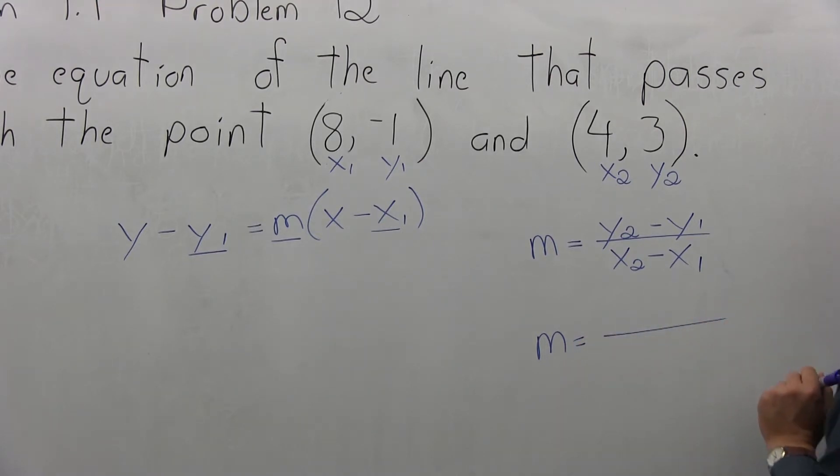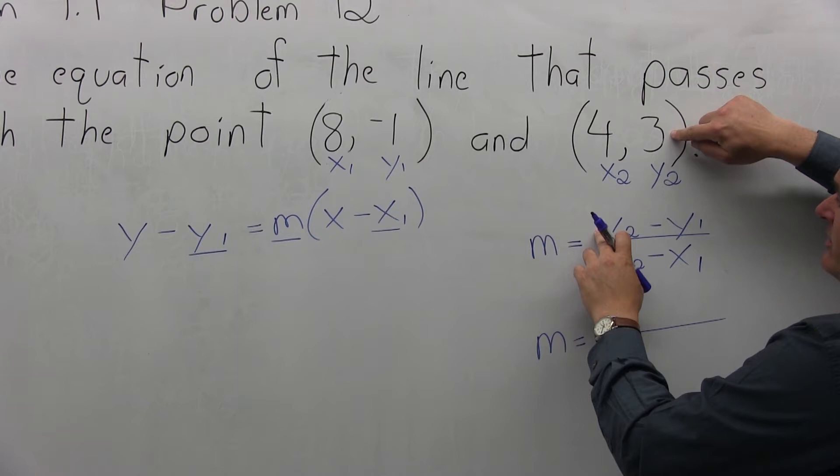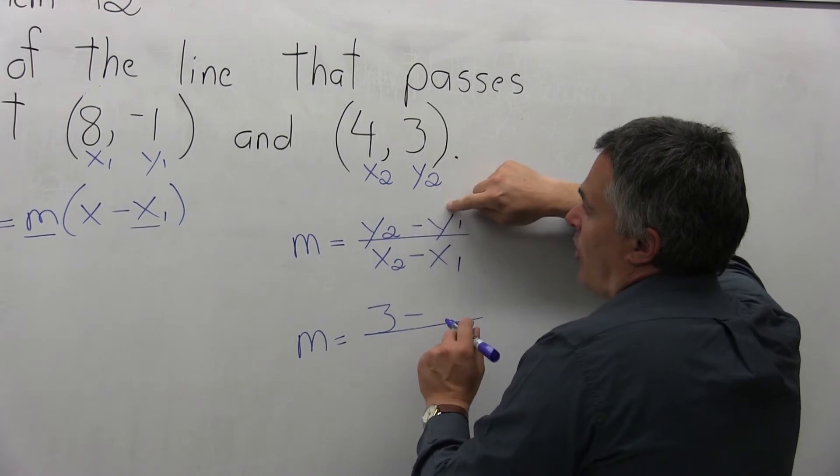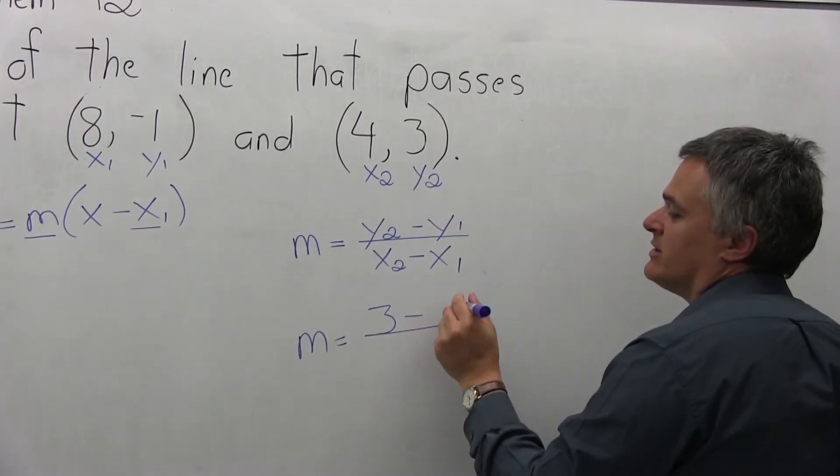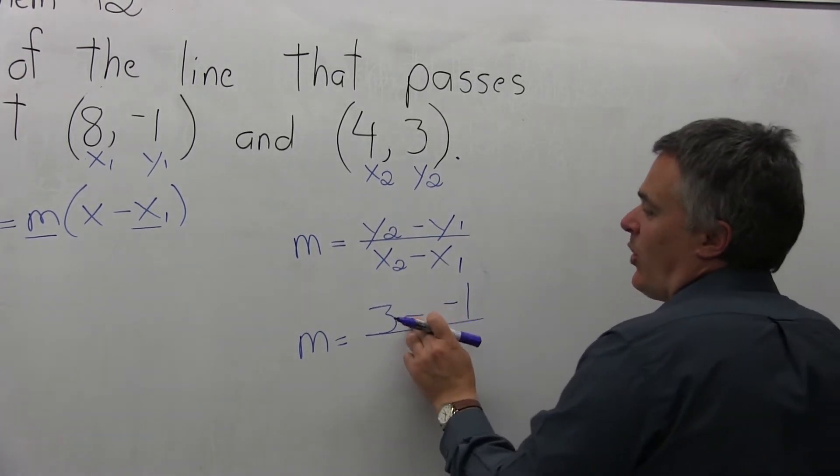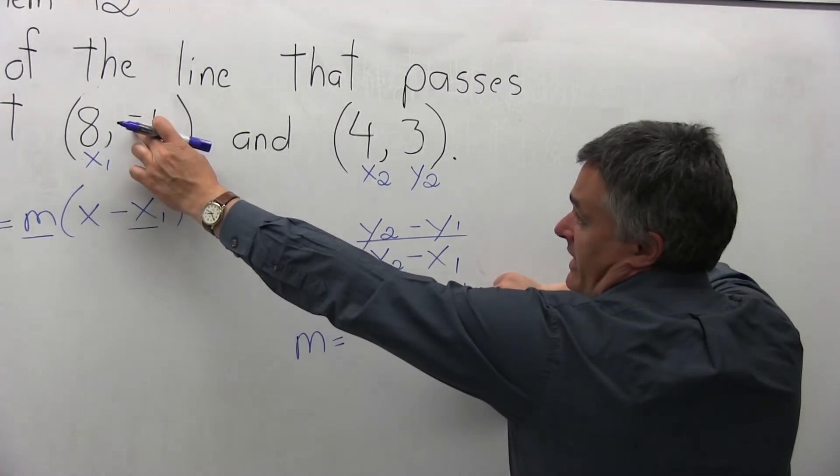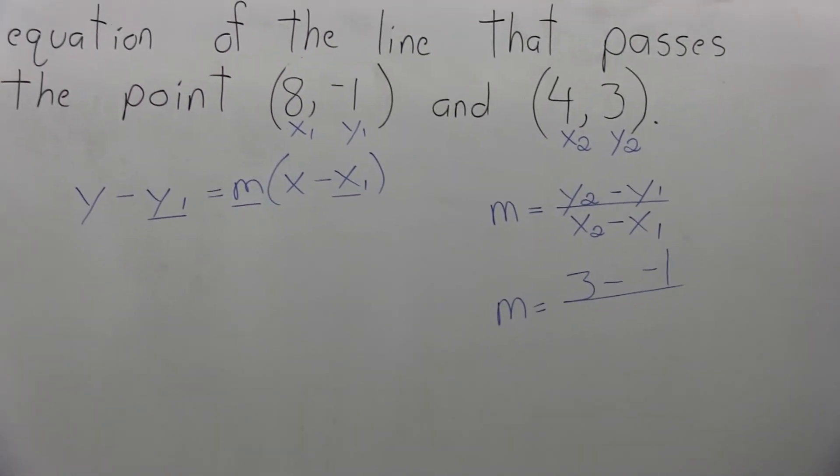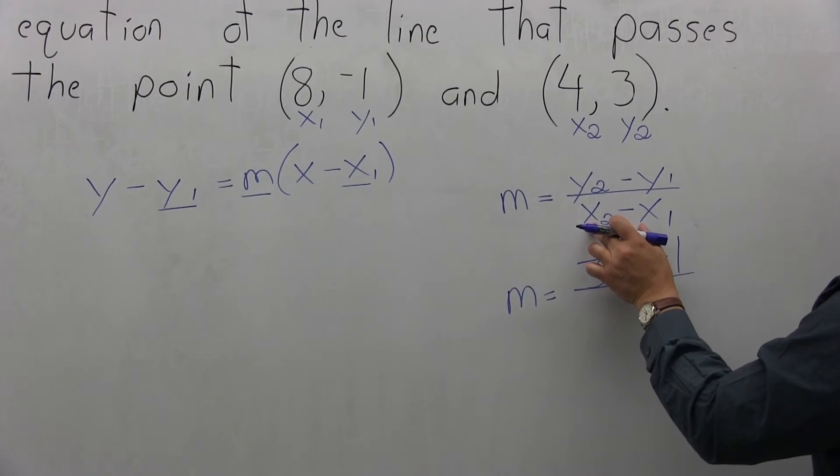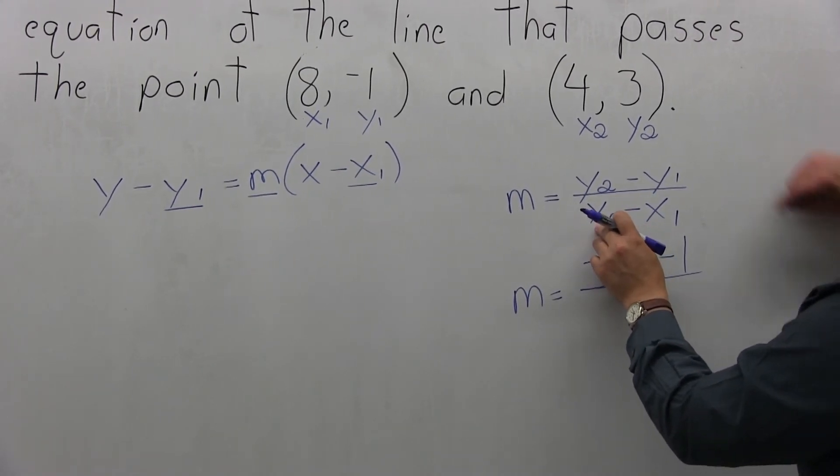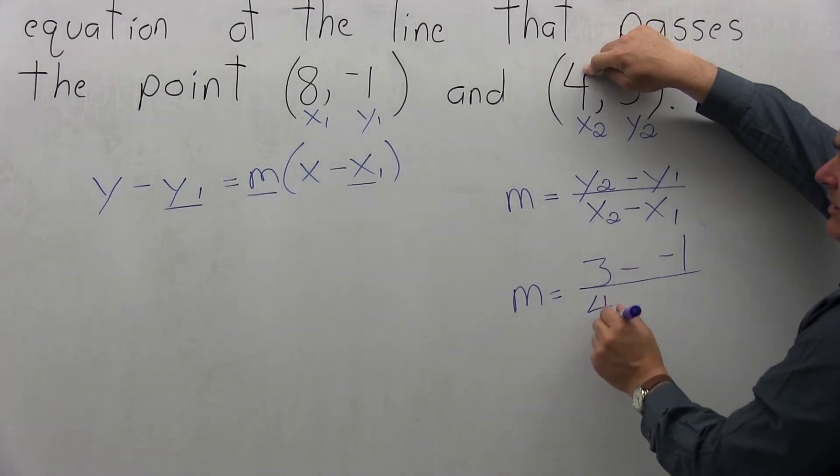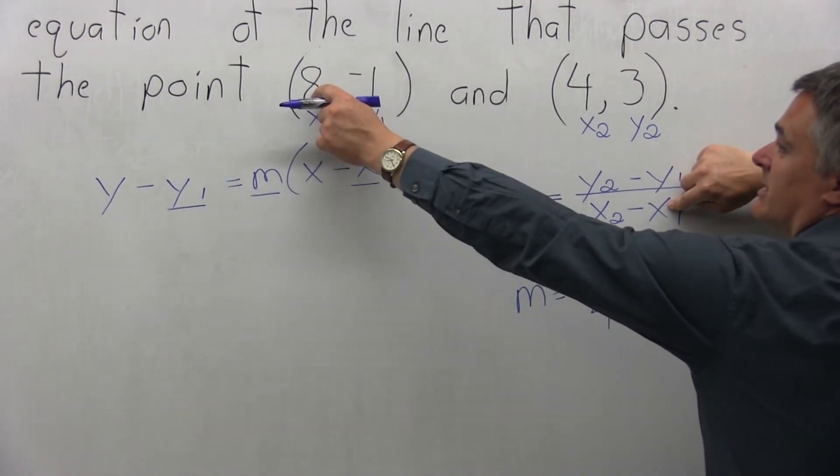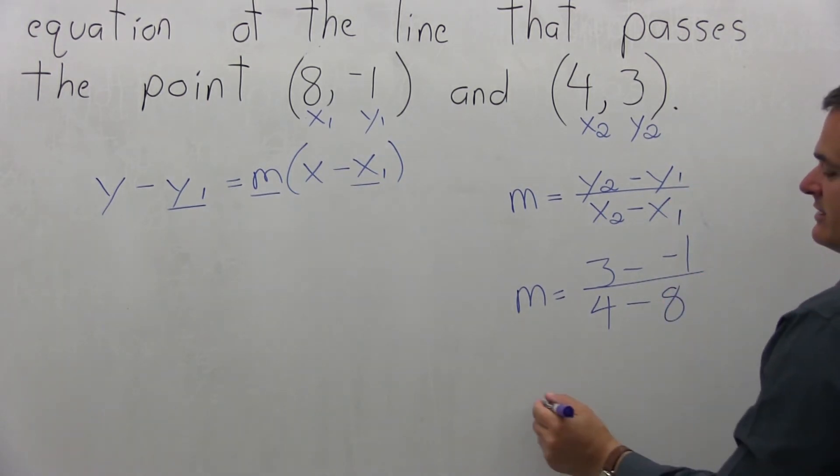So, m equals, on top, I'm going to fill in y2. The value of y2 is 3. Then minus y1, the value of y1 is negative 1. So here's one of those cases where we have two negatives. One negative from the formula, and the other negative from the fact that the point is a negative value. By the end, that's going to become 3 plus 1 instead of 3 minus negative 1. In the denominator of my slope formula, I have x2 minus x1. x2, I have right here, which is 4 minus, from the formula, x1, the value of x1 is 8 from the information that's given.